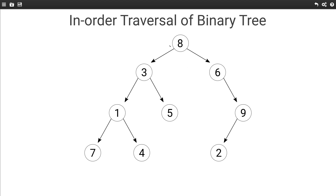We start by visiting the left subtree, then again the left subtree, and then again the left subtree. Here the left is null, so we are done visiting the left — so we visit 7. In this case we are just going to print the value. Then once we are done visiting the left subtree of 1, we need to visit 1, so we just print it out.